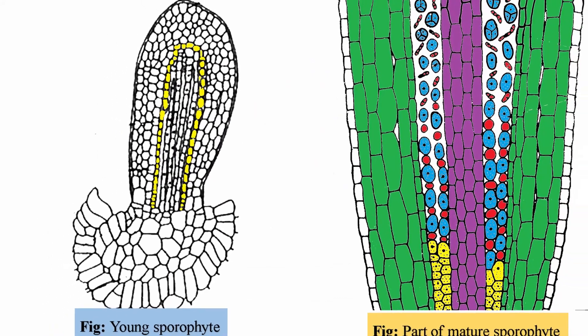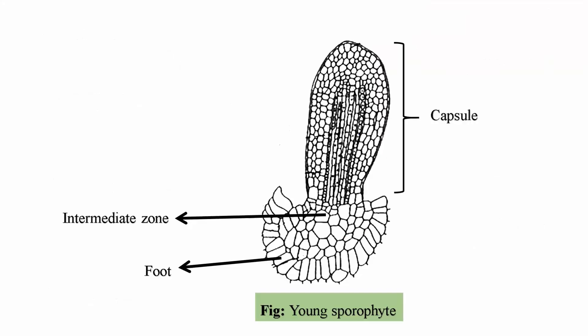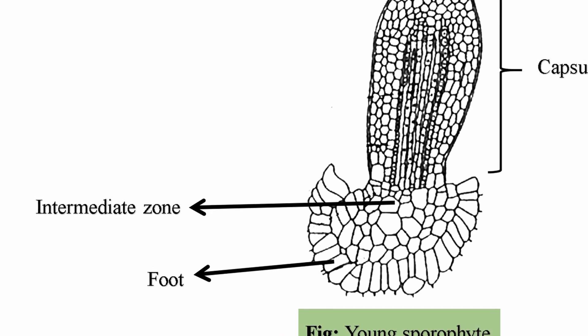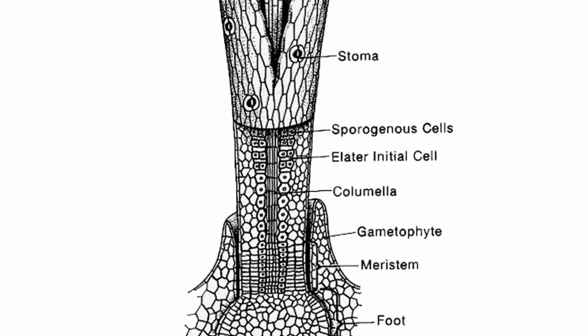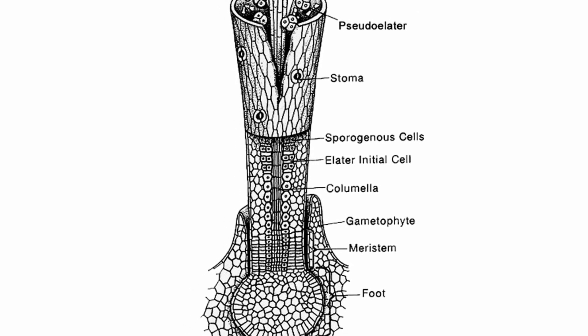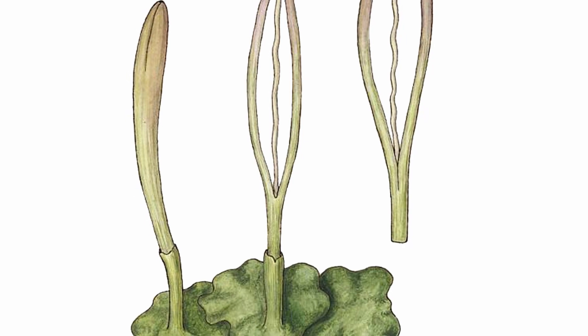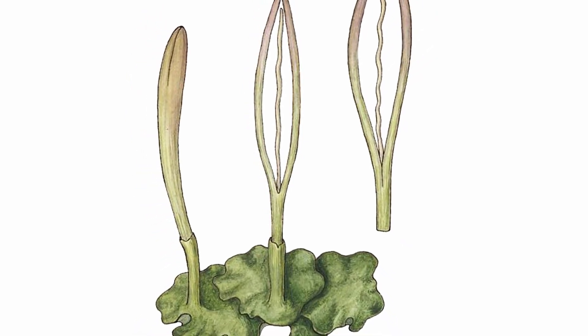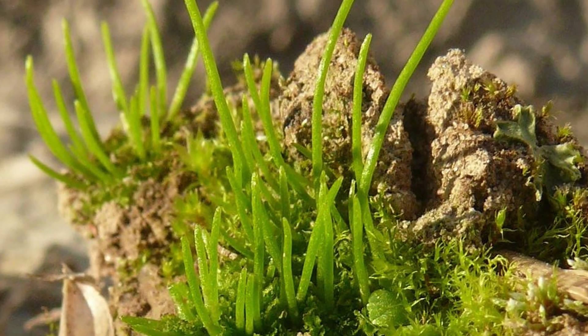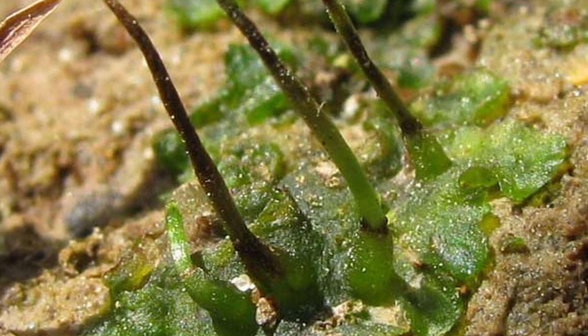The apical growth of the capsule ceases with the establishment of the archesporium, columella, and the wall region. Further growth of the capsule is by the activity of the basal intercalary meristem in the intermediate zone. It continuously adds new cells at the base of the capsule which become progressively differentiated into the columella, the archesporium, and the capsule wall. Consequently, the dehiscence of the capsule extends over long periods. The sporophyte of anthoceros continues to live as long as the thalus lives. It is a sharp contrast to the short-lived sporophyte of the liverworts.